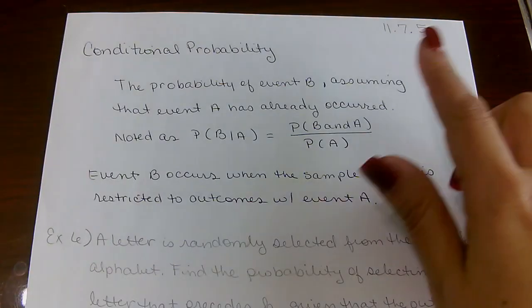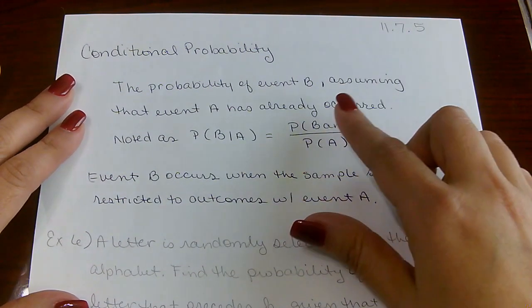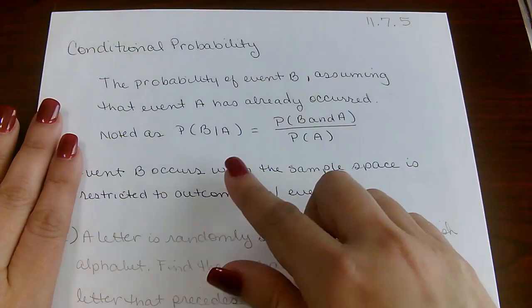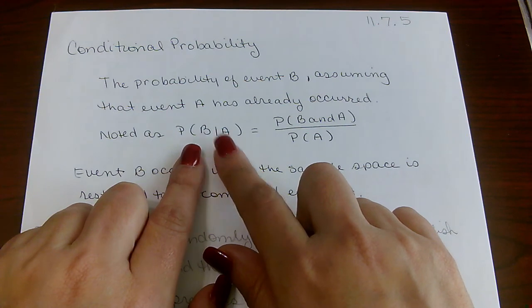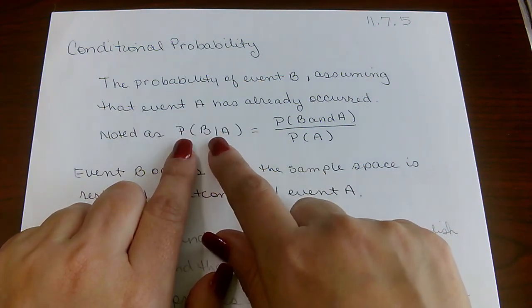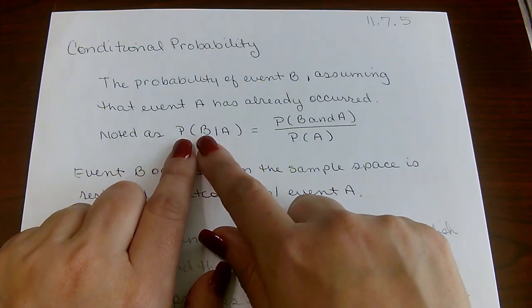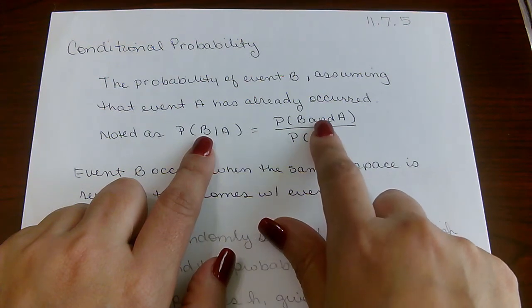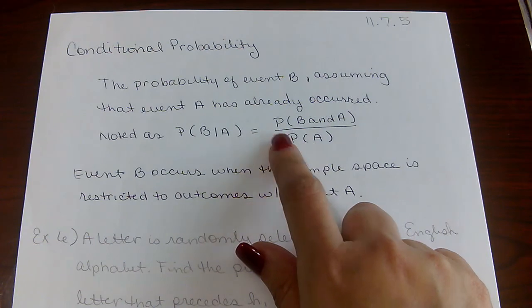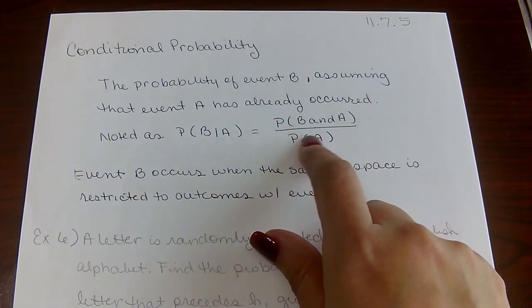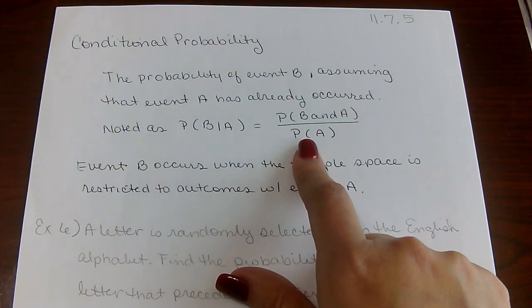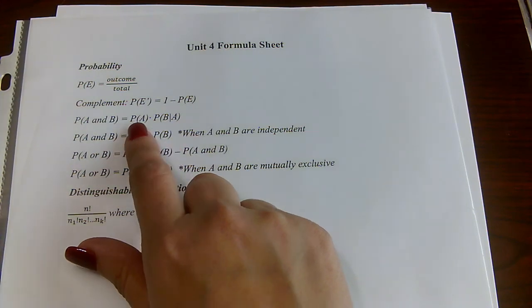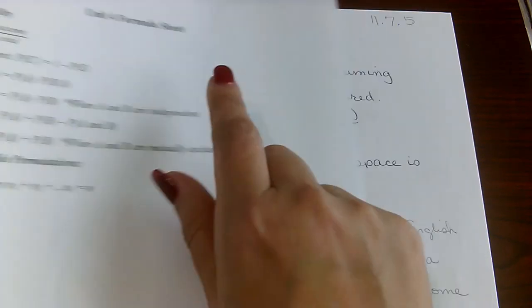Now let's look at conditional probability — slightly different. Conditional probability is the probability of an event assuming that event A has already occurred. The notation P(B|A) means the probability of B given A. Written in long form: P(B|A) = P(B and A) / P(A). If you divide both sides of the multiplication rule by P(A), you get the same thing. These formulas are on your formula sheet.